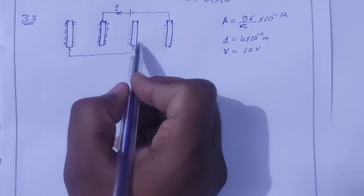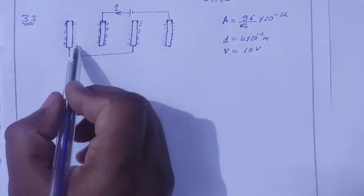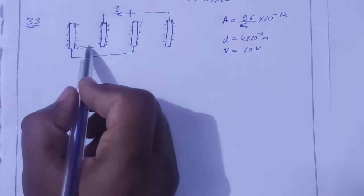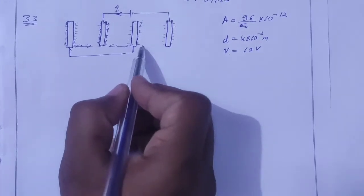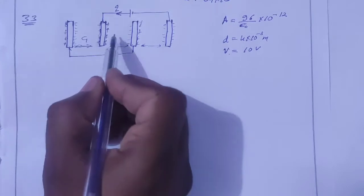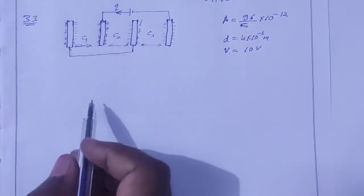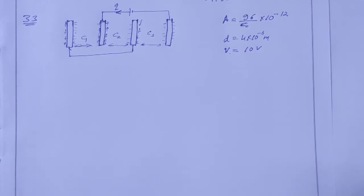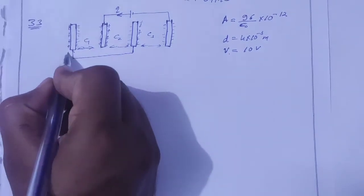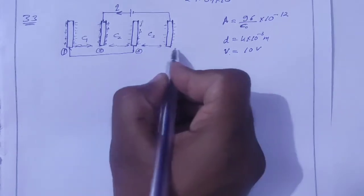This arrangement forms three capacitors: C1, C2, and C3. In each capacitor, positive and negative charges are induced on the respective plates. The combination of these three capacitors is to be determined — whether they are in series, parallel, or both.